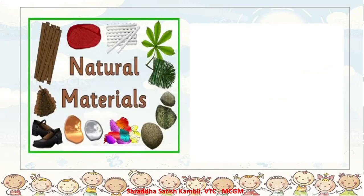How is glass made? There are certain things which are natural materials. For example, you have wood, wool, cotton, leaves, feather, stone, gold, silver. There are so many things which are natural.